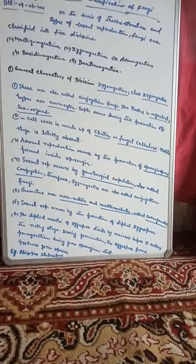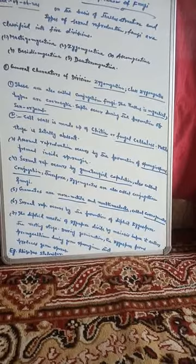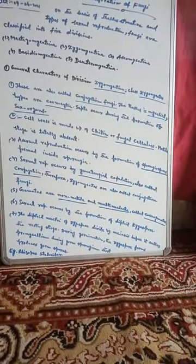The sixth character is that sexual reproduction occurs by the formation of a diploid zygospore. The seventh character is that the diploid nuclei of the zygospore divide by meiosis before the zygospore enters the resting stage. During germination, the zygospore forms a promycelium, which has a germ sporangium at its tip that produces germ spores.